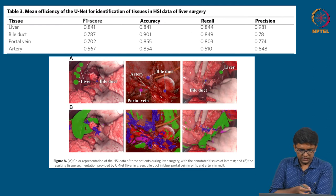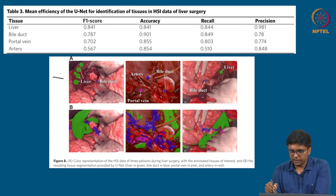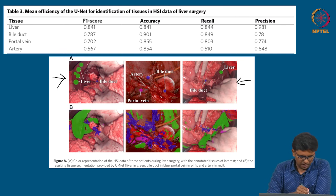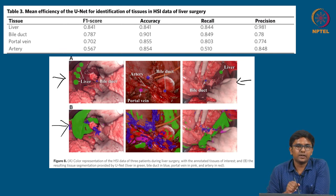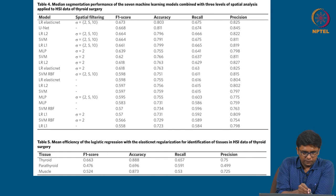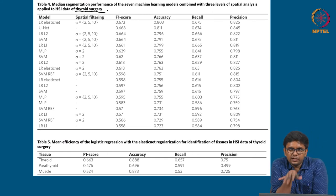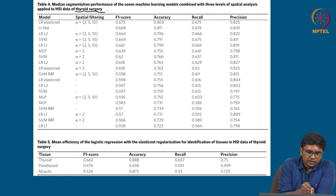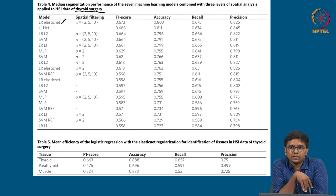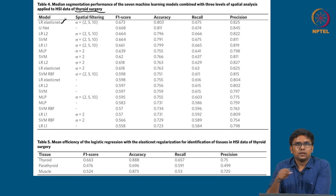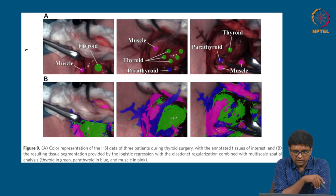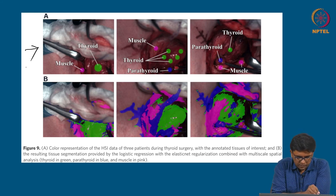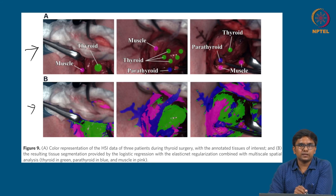This image shows the hyperspectral imaging data in series A and how the tissues are segmented using U-Net in series B. For the thyroid surgery data, the LRL elastic net algorithm scored much higher over all other algorithms. This is the HSI series for thyroid surgery, showing how tissue segmentation occurs — the thyroid gland is seen in green and the regions where the parathyroid will be are given in blue.